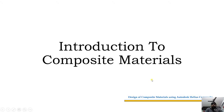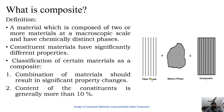In this video, I am going to introduce you to the concept of composite materials. A composite material is a combination of two materials combined at a macroscopic scale with chemically distinct phases. The constituent materials used to make up a composite material will have significantly different properties.